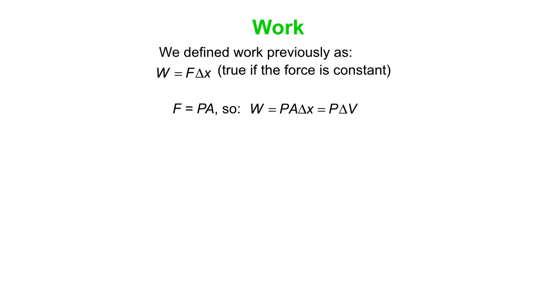So let's think about work. Previously, we defined work as force times delta X. It's true if the force is constant. Now, of course, F is pressure times area. So work is therefore pressure times area times delta X. But of course, an area times a length is a volume. So we get pressure times delta V.